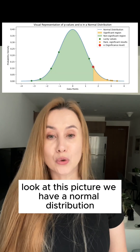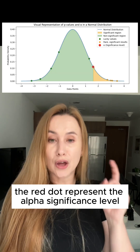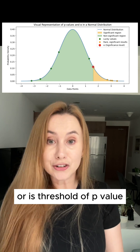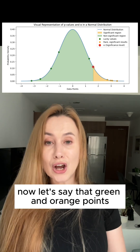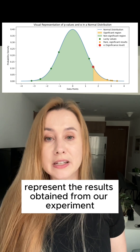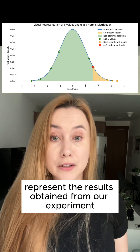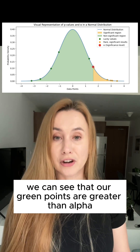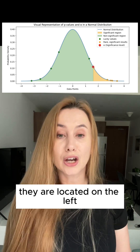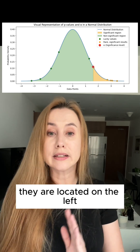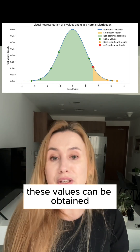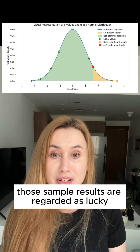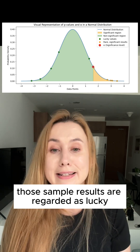Look at this picture — we have a normal distribution. The red dot represents the alpha significance level, or threshold of p-value. The green and orange points represent the results obtained from our experiment. We can see that the green points are greater than alpha; they are located on the left. These values can be obtained with a very high likelihood, and that's why those results are regarded as lucky.